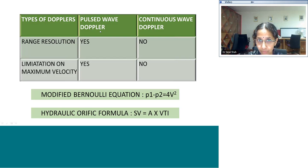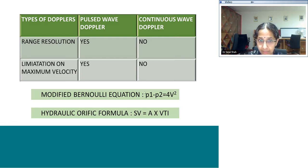There are two types of Dopplers: the pulsed wave and the continuous wave. Pulsed wave Doppler is done at a particular point, whereas continuous wave Doppler picks up all signals across that line. Pulsed wave Doppler has beautiful range resolution; however, there is a limit to its maximum velocity, usually around 1.5 to 2 meters per second. Continuous wave has no range resolution but no limitation to maximum velocity.